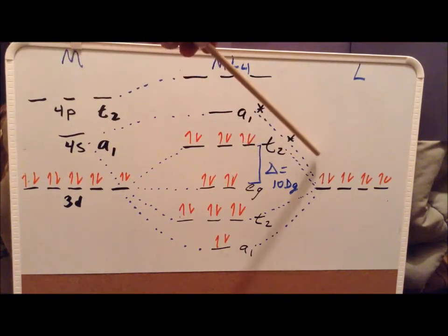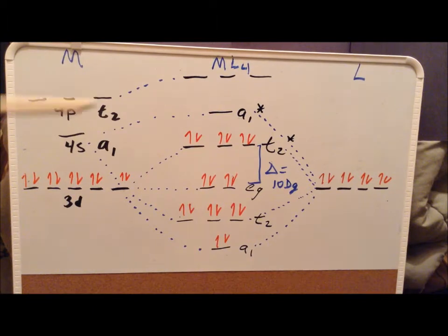We have our four ligand orbitals over here. Since each of those can contain two electrons, we get a total of eight electrons from the ligands.